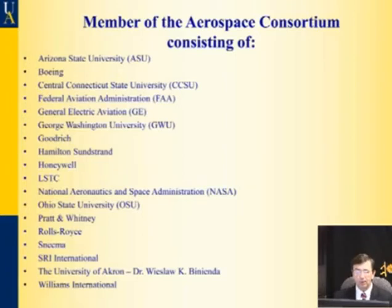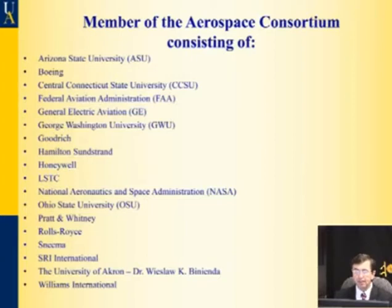I have been working on this methodology with NASA to develop special braided composite materials and finite element models that could be used for a jet engine containment system. This braided composite material is already utilized by GEAE in their new jet engine called GEnX, which was selected by Boeing for the Dreamliner Boeing 787. Similar types of braided composite materials were also selected by Williams and Honeywell for their new types of jet engines.